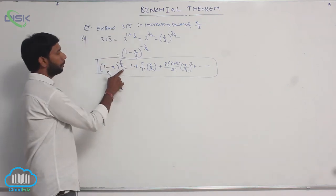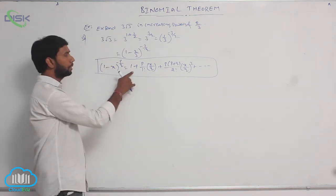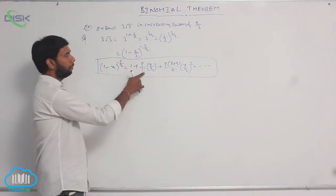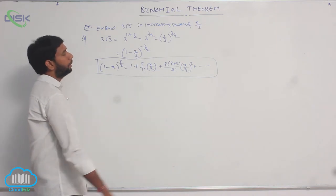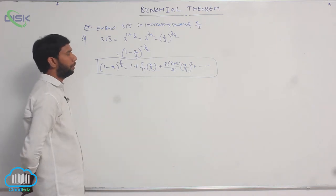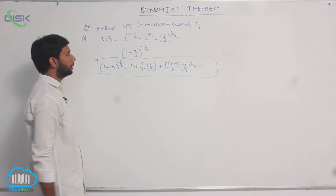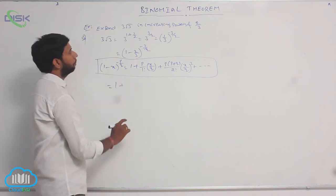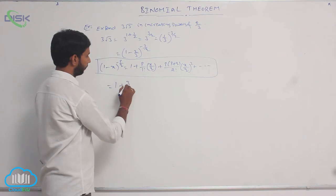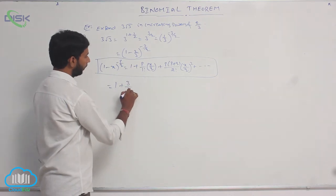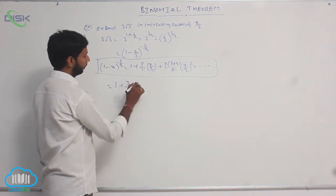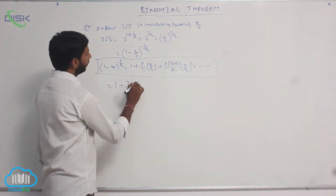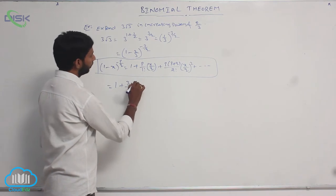Apply the formula: (1 - x) whole power minus p/q equals 1 plus p/(1 factorial) times (x/q) plus p times (p + q)/(2 factorial) times (x/q) whole squared plus and so on. Here p is equal to 3.